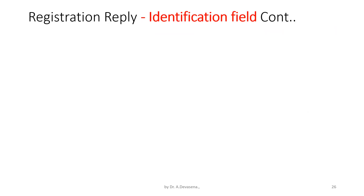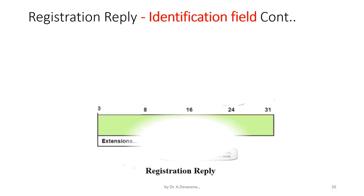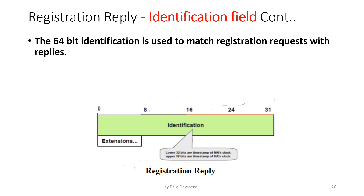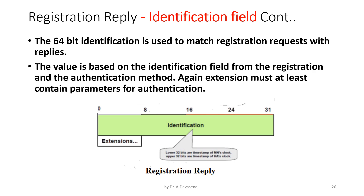The 64-bit identification field in the registration reply is used to match registration requests with replies. The value is based on the identification field from the registration and the authentication method. The extension must at least contain parameters for authentication.